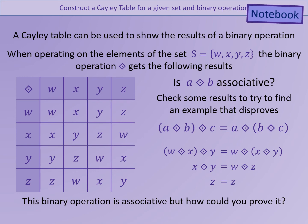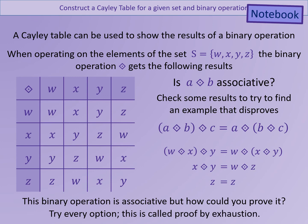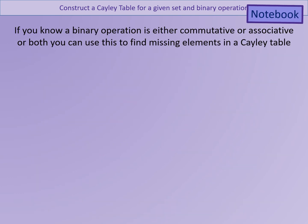To prove associativity for an operation given in a table, the only way is to try every option — this is called proof by exhaustion. If we know that a binary operation is commutative or associative, we can use these facts to help fill in missing elements in a Cayley table.